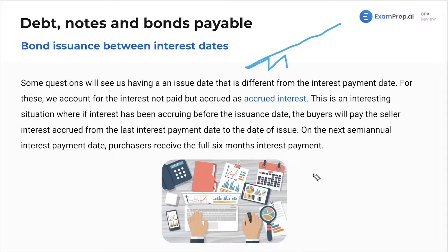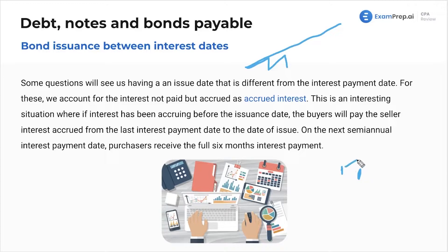Very rarely, but in some of these questions, we'll see that the bond was issued on a certain date but interest actually started accruing before the bond was even issued. You might say that's weird — why is that? The straight answer is: don't worry about it, it just is like that in some of our test questions. The interest will basically be accruing before you even issued the bond itself.